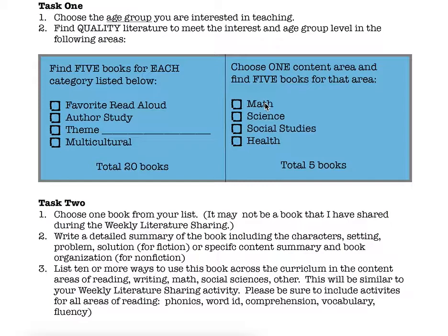Then you're going to go through the literature — I'll show you an example — and you're going to document whether it's fiction or nonfiction, and also list the author's name. Last but not least, if you're in the multicultural or content area category, you're going to share specifically what area that book falls under. At the end of this project, you will have selected a total of twenty-five books — twenty from one side and five from the other.